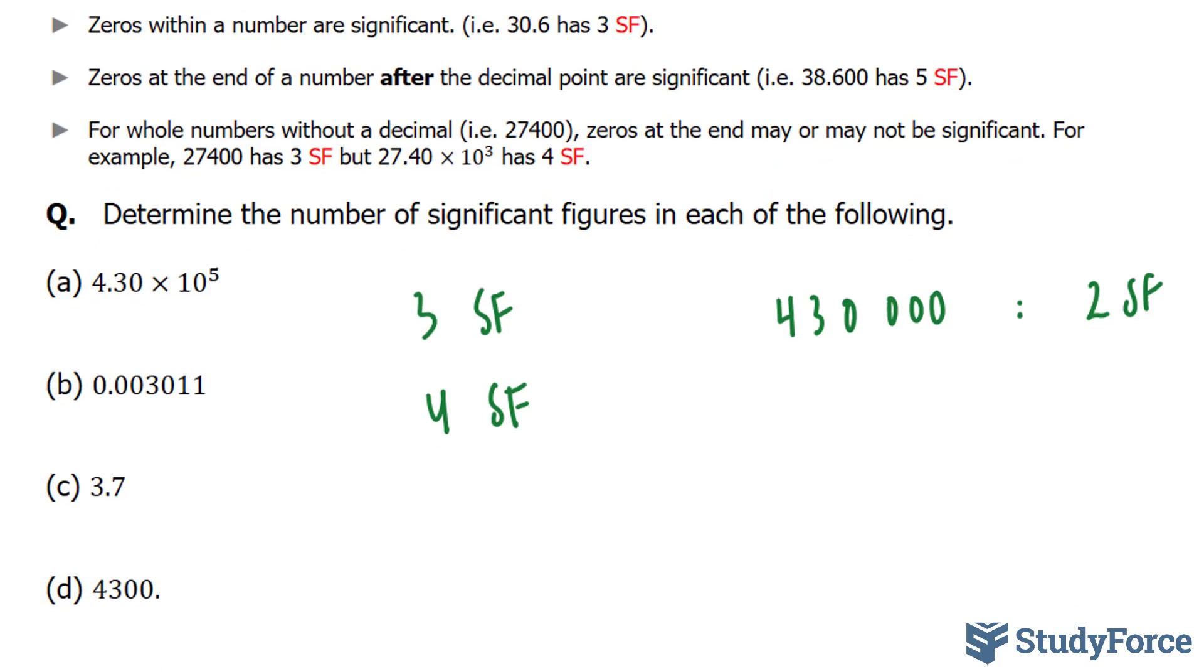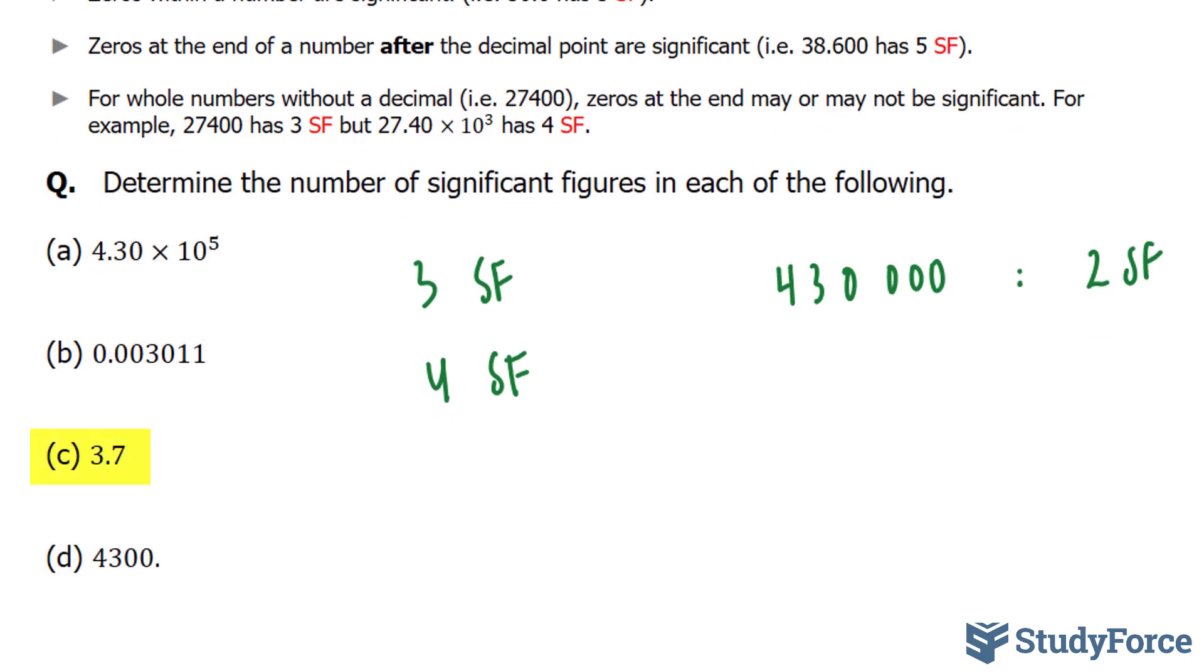Moving on to the next example, in C, we have two significant figures. Both the 3 and the 7 are significant.